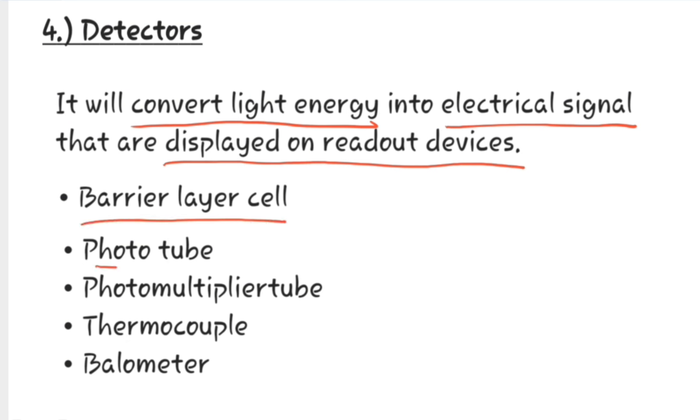First is barrier layer cells, phototube, photomultiplier tube which is also known as PMT, then thermocouple, bolometer, etc. Various types of detectors are used, but most commonly used detector is photomultiplier tube detector.